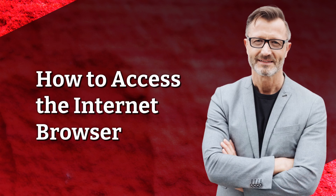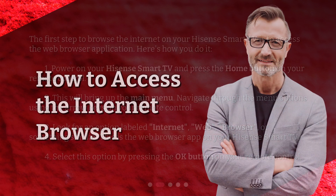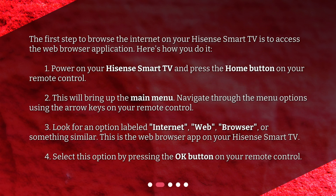How to access the internet browser. The first step to browse the internet on your Hisense Smart TV is to access the web browser application. Here's how you do it. Power on your Hisense Smart TV and press the home button on your remote control. This will bring up the main menu. Navigate through the menu options using the arrow keys on your remote control.